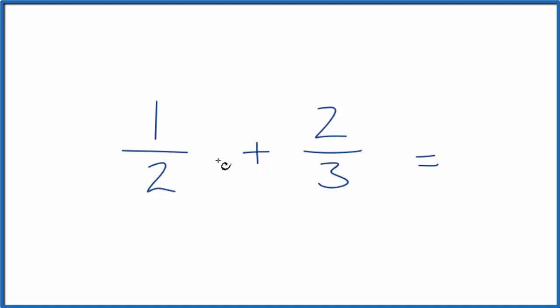What we need to do when we're adding fractions is find a denominator that's the same for both of these numbers. So we're looking for the lowest common denominator. It looks like two would go into six three times, three would go into six twice.